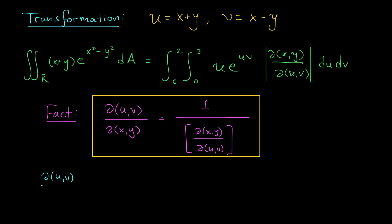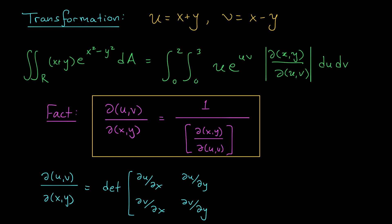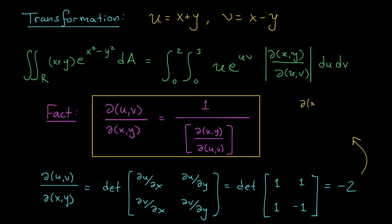So with this in mind, my backwards Jacobian — partial uv by partial xy — is the determinant of the matrix with entries: partial u by partial x is 1, partial v by partial x is 1, partial u by partial y is 1, and partial v by partial y is minus 1. So I get a determinant of 1 times minus 1, minus 1, giving a determinant of minus 2. This means that my regular Jacobian, partial xy over partial uv, has a value of minus one half. Of course, when I plug this into my integral, I'm going to be taking its absolute value.